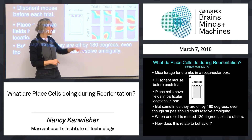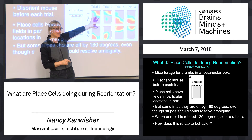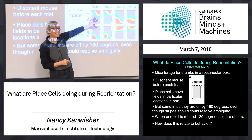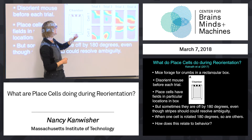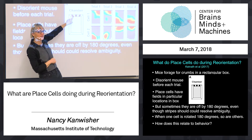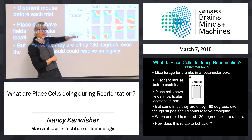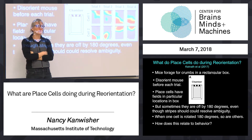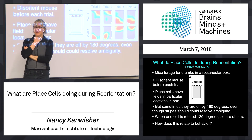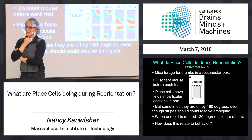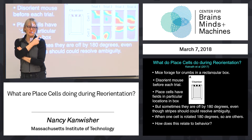Does everybody get how this is just what a place cell would do if it's using the shape of space, not using the symmetry-breaking information? So the place cells aren't using the symmetry information — they're just using the shape of space. This is a kind of neural correlate of this reorientation phenomenon that was described decades before these data were collected.